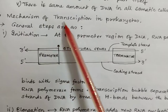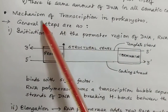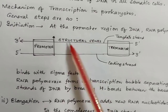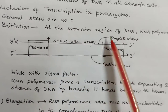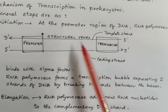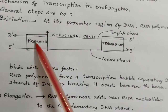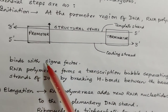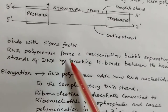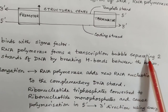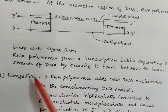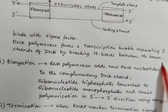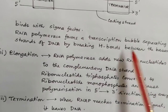Now the mechanism of transcription in prokaryotes. The general steps: number one is initiation at the promoter — at this region the RNA polymerase binds with the sigma factor. RNA polymerase forms a transcription bubble, separating the two strands of DNA by breaking hydrogen bonds between the nitrogenous bases.